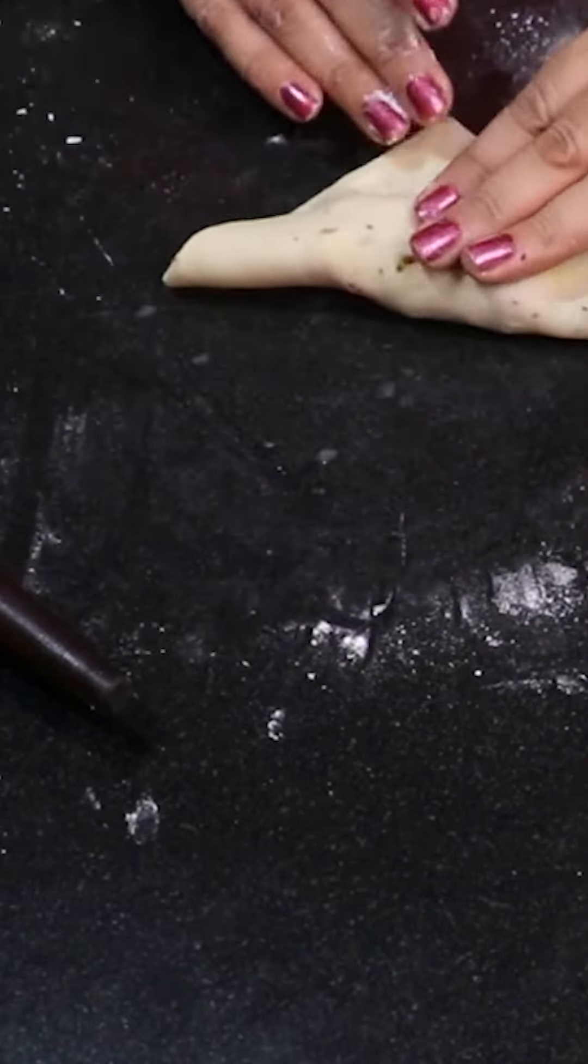We'll cut the dough and cut the side corners. We'll fold it like this. You can make any shape.